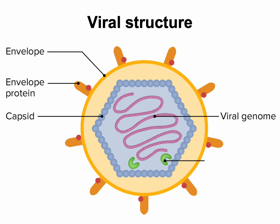Let's look at simple viral structure and compare it to prokaryote and eukaryote structures to appreciate how simple viruses are. The structures relevant for this class are: the envelope and envelope proteins (glycoproteins) on the surface, and the viral genome. Not all viruses have envelopes — the only things a virus absolutely needs are a capsid and a viral genome. The capsid is a protective protein coating around the genome.